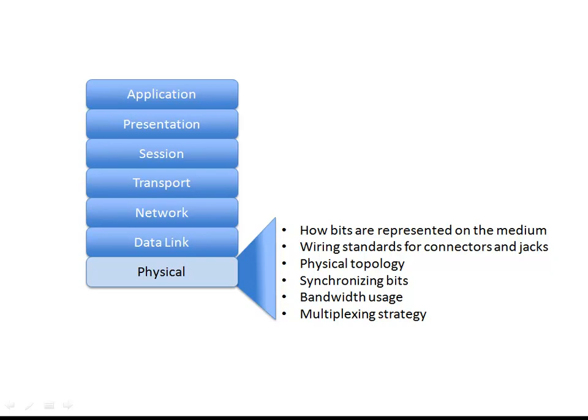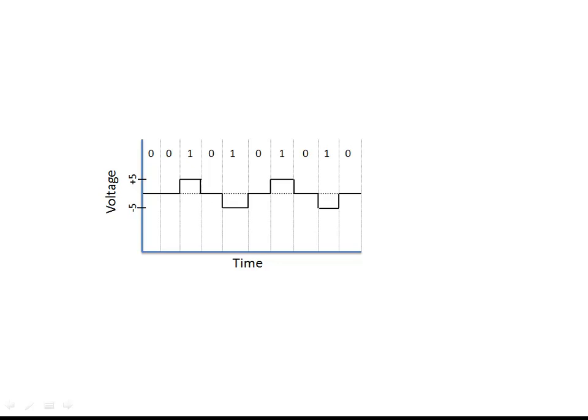The physical layer specifies how bits — how 1s and 0s — are represented on the medium. How do we represent a binary 1 or 0? On a copper wire, a binary 1 might be represented by the presence of voltage, and a binary 0 by the absence of voltage. Over fiber optic cable, it might be the presence or absence of photons — the presence or absence of light. What I've just described is current state modulation. The approach being used is called alternate mark inversion, or AMI.